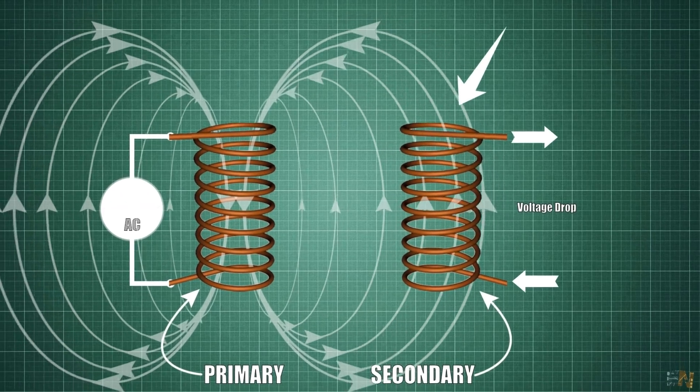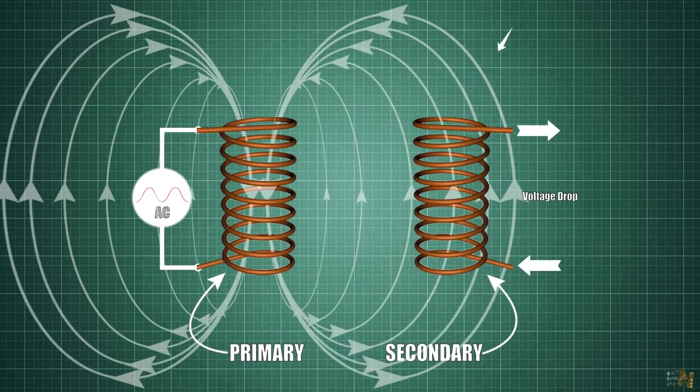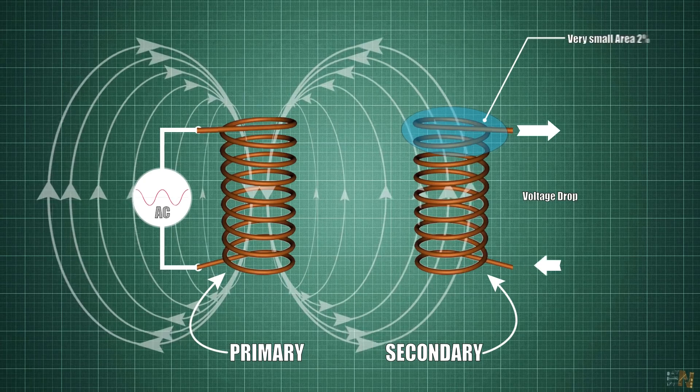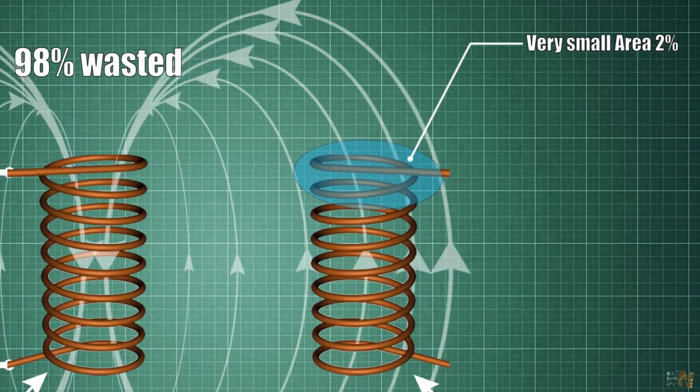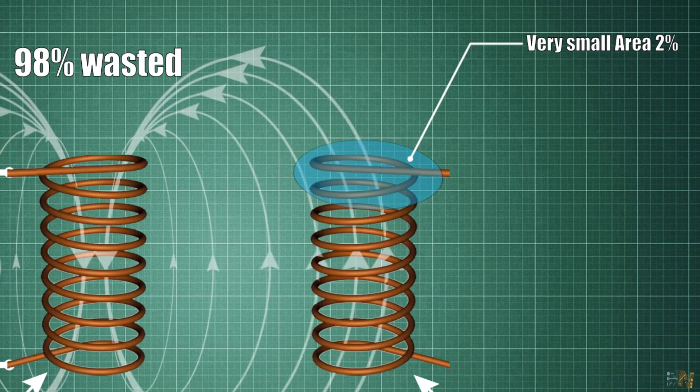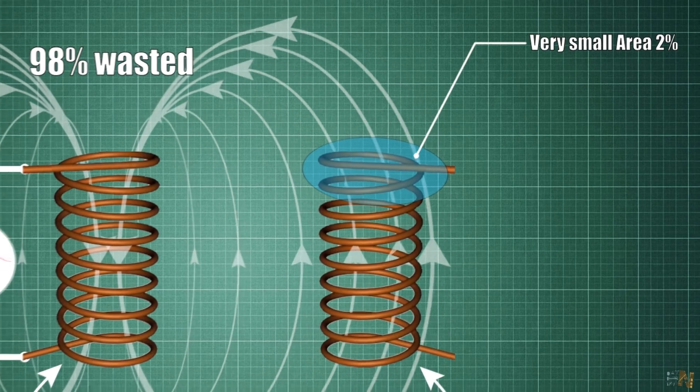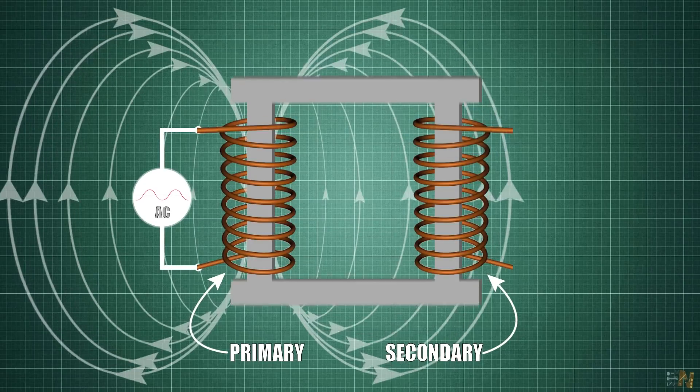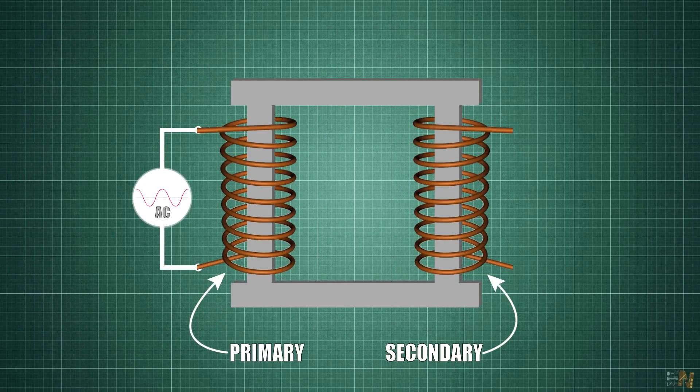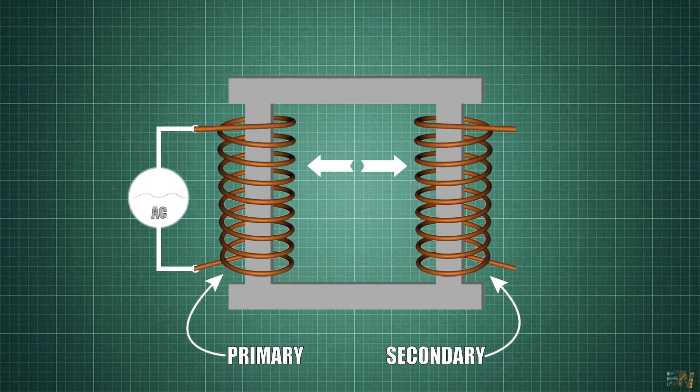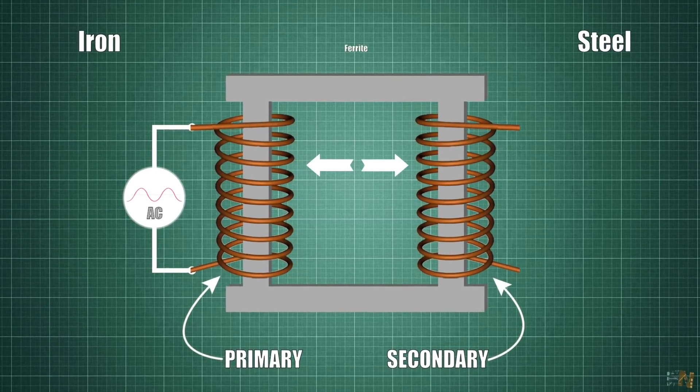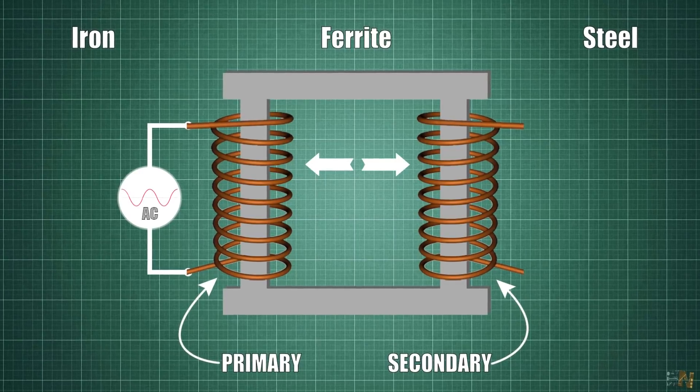This voltage is very, very small because the flux density over the secondary area is very small also. Basically 90% of the magnetic flux is wasted all around. Only a tiny portion reaches the secondary coil. So for that we use the magnetic core. We place that in between of the primary and the secondary. This can be made out of iron, steel, ferrite or another low reluctance magnetic material.